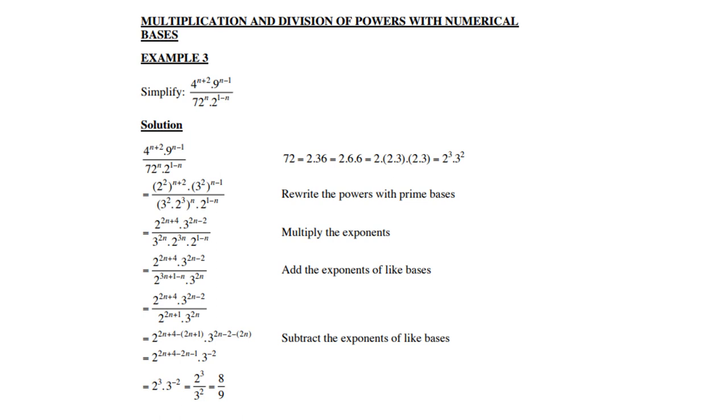Let's look at example 3: 4 to the power n+2 times 9 to the power n-1 divided by 72 to the power n times 2 to the power 1-n. If your bases are numbers like 4, 9, 72 and 2, try and change them to prime numbers. Like 4 is 2 squared, 9 is 3 squared, 72 is 3 squared times 2 cubed, and 2 is already a prime number. That is step number 1.